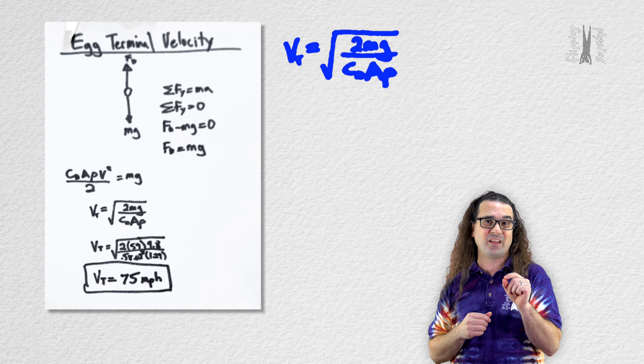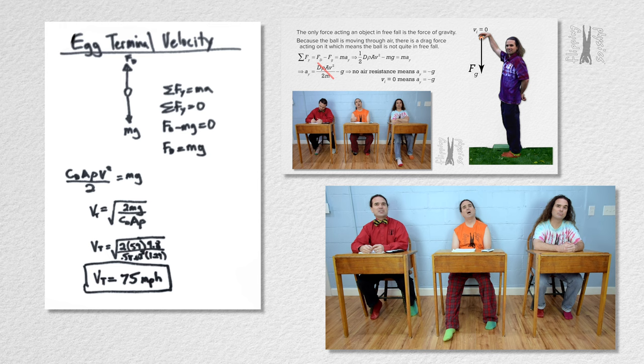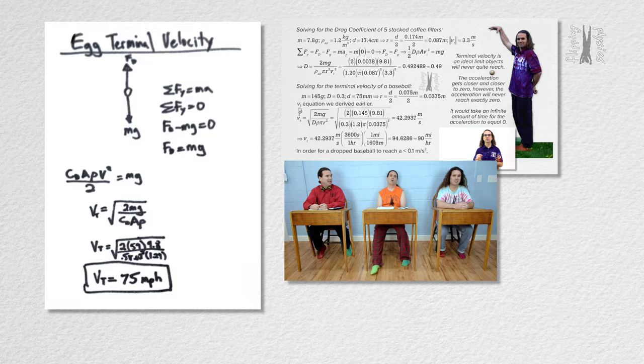The equation you derived for terminal velocity is terminal velocity equals the square root of the quantity two times the mass of the egg times the acceleration due to gravity all divided by the drag coefficient of the egg times the cross-sectional area of the egg times the density of air. Hey, we did an entire lesson where we derived that equation for terminal velocity, right Mr. P? Yes Billy, we did. Actually, we've done a lot of lessons about the drag force, the drag coefficient, and even the time constant.